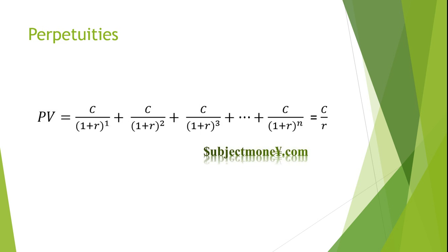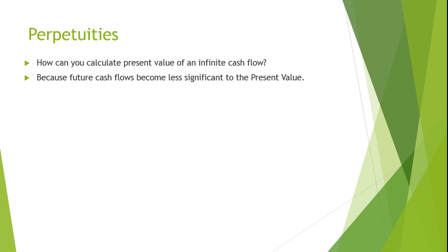You may wonder how it would be possible to find the present value of an infinite number of cash flows. This is due to the time value of money. The further into the future the cash flow is received, the less significant its contribution to the present value is. For example, a $100 cash flow received one year from today would have a present value of about $90.91 if discounted at a 10% interest rate. A $100 cash flow received 30 years from today would only have a present value of around $5.73 discounted at the same interest rate.